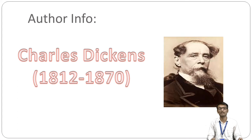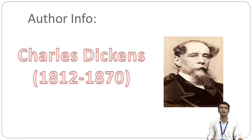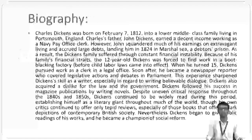Dickens wrote his final novel, Our Mutual Friend, from 1864 to 1865. Soon after the publication of this work, his health began to decline. In 1870, he began work on another novel called The Mystery of Edwin Drood, but he died of a stroke on June 9, 1870, before he could finish it. Now, after discussing the life of the author Charles Dickens in detail, let us look at the characteristics of the Victorian period.